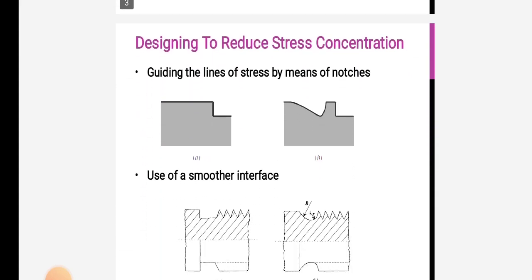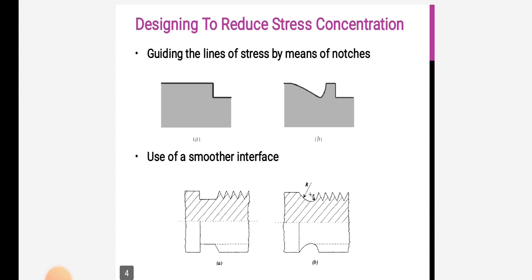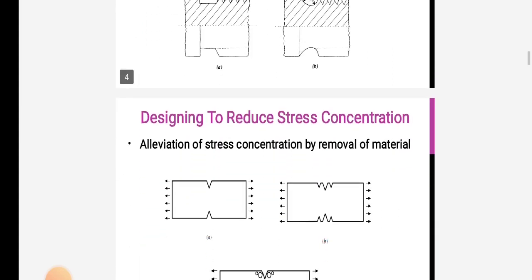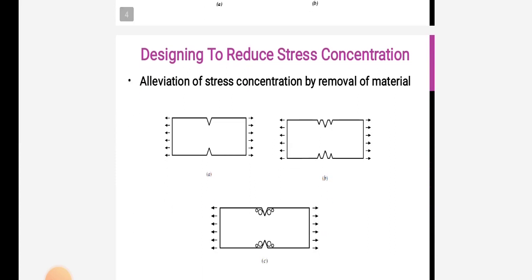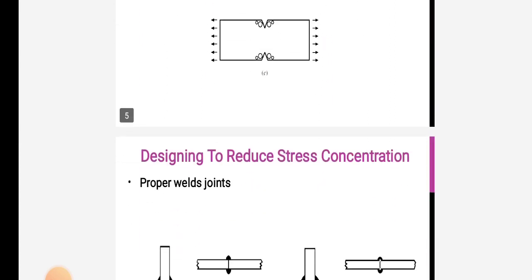Designing to reduce stress concentration involves lines of stress by means of notches, use of smooth interfaces, design elevation of stress concentration by removal of material, and using proper welded joints to reduce stress concentration.